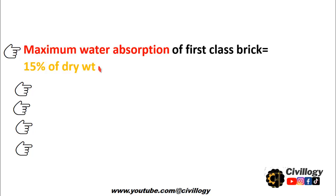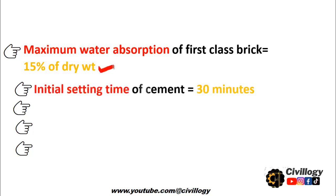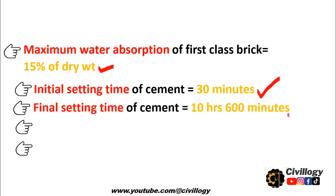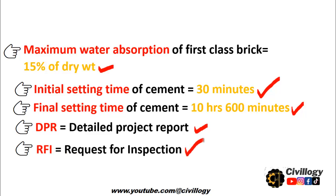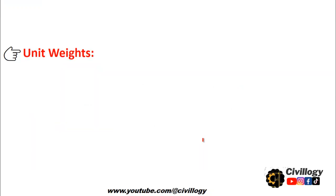The maximum water absorption of first class brick should be equal to 15 percent of its dry weight. The initial setting time of cement is equal to 30 minutes, and the final setting time of cement is equal to 10 hours or 600 minutes. DPR is actually a Detailed Project Report, which the site engineer prepares fortnightly or after one week or after 10 days, depending upon the project progress. RFI is a Request for Inspection, which the contractor sends to the consultant in written form requesting them to come and check the work on site.